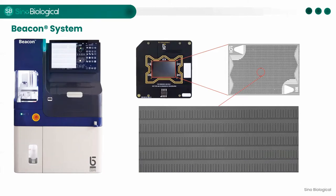Beacon is an automatic device with functions of a cell incubator, biosafety cabinet, fluorescence microscope, and automated robotic arm, which integrates microfluidics, signal detection, and light-induced technologies. Based on the morphology and fluorescence characterization of cells, the Beacon system can conduct cell isolation, cell culture, real-time detection of cell secretion, and multiplex detection directly on the chip. Target cells can also be exported through the Beacon system. The system is highly automatic and less dependent on operators.